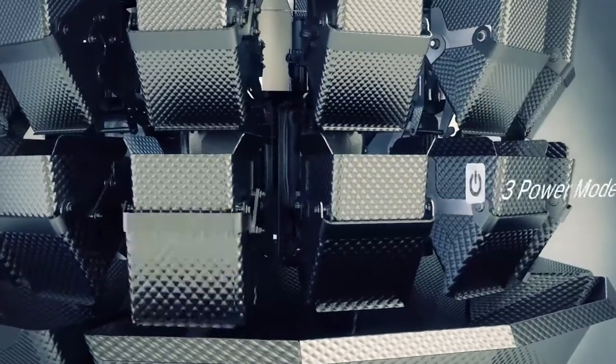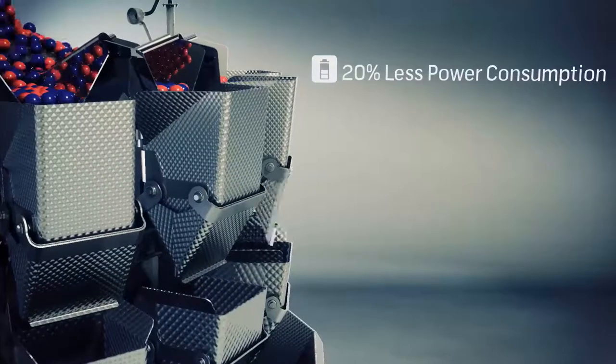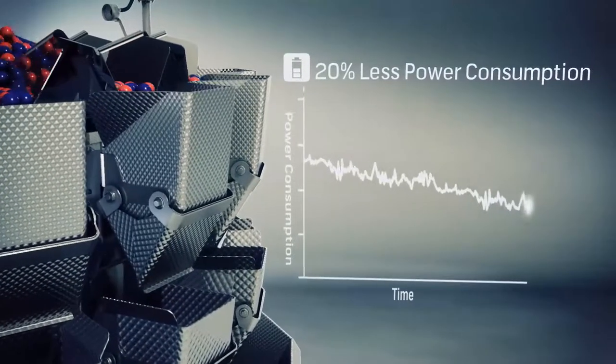A choice of three power modes changes the amount of energy required to run the weigher at high, medium or low capacity. This can reduce your power consumption by up to 20%.